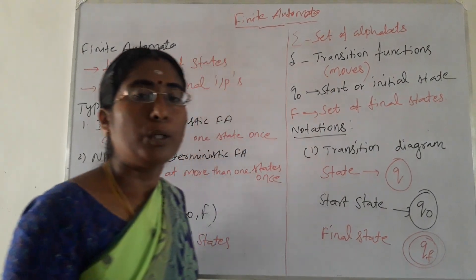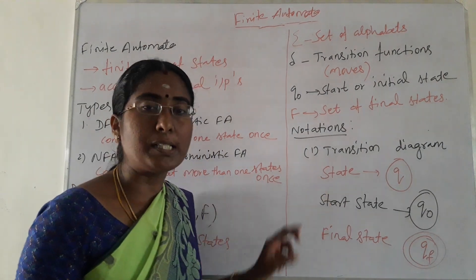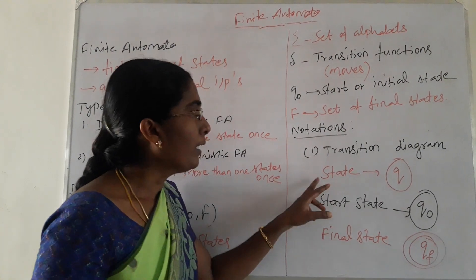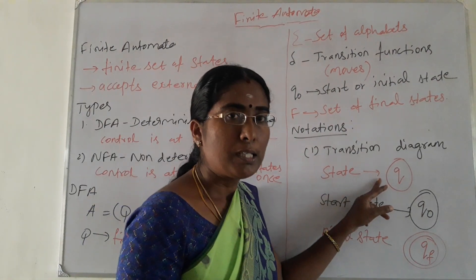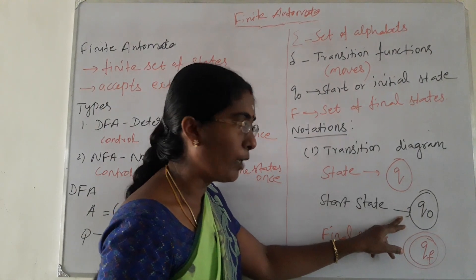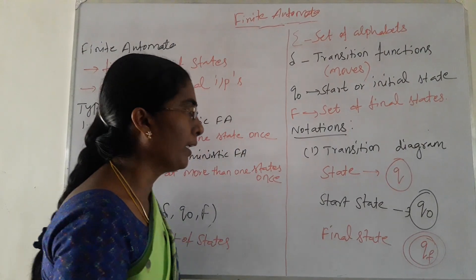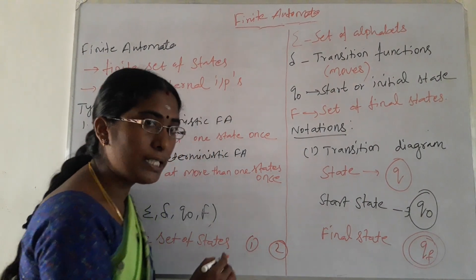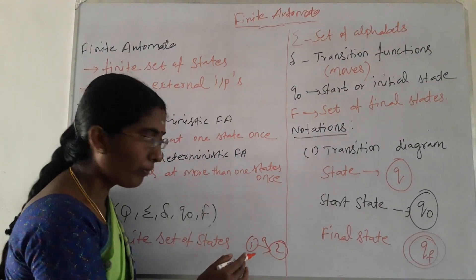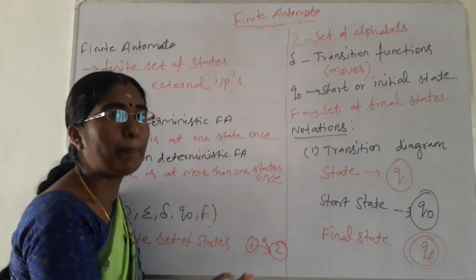What are the two different notations for representing a DFA? First one is the transition diagram and second one is the transition table. The transition diagram represents the DFA graphically or pictorially. States are represented by circles, the start state by an arrow mark, and the final state by a double circle. Transitions between states are represented by arrow marks labeled with the input symbol.